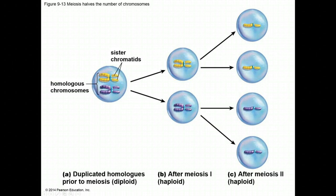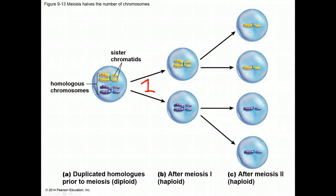The first nuclear division, meiosis 1, separates the pairs of homologues, with each daughter nucleus receiving one. Then the second nuclear division, meiosis 2, will separate the chromatids and parcel one chromatid into each of two more daughter cells.